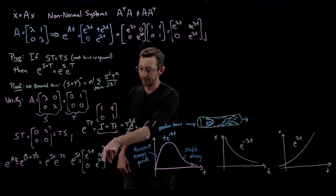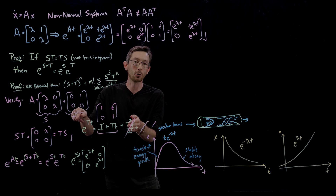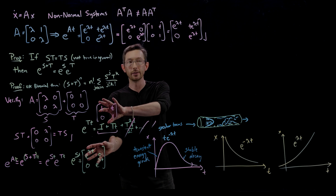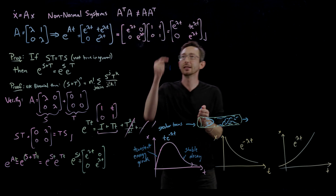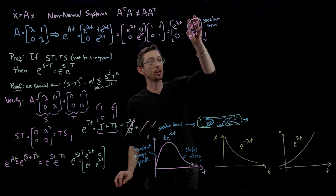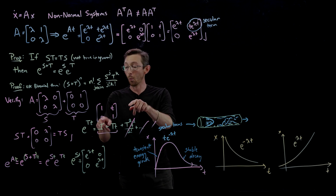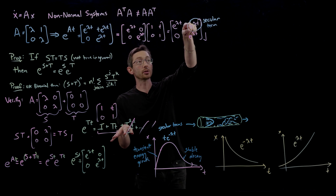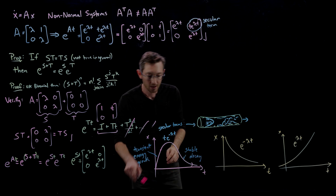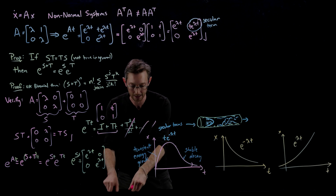E^S is just a diagonal matrix, and e^T is easy because its Taylor series truncates — T², T³, T⁴ are all zero, so all higher terms die, leaving just identity plus T·t. Multiplying those two matrices gives the solution. It's specifically this secular term — t·e^(λt) — that gives all of this interesting transient energy growth. If you plot this in Python or MATLAB, for short times the t term dominates (the Taylor series of e starts as 1 + t + ...), giving a slope of one; for longer times, e^(-λt) dominates and eventually it dies out.